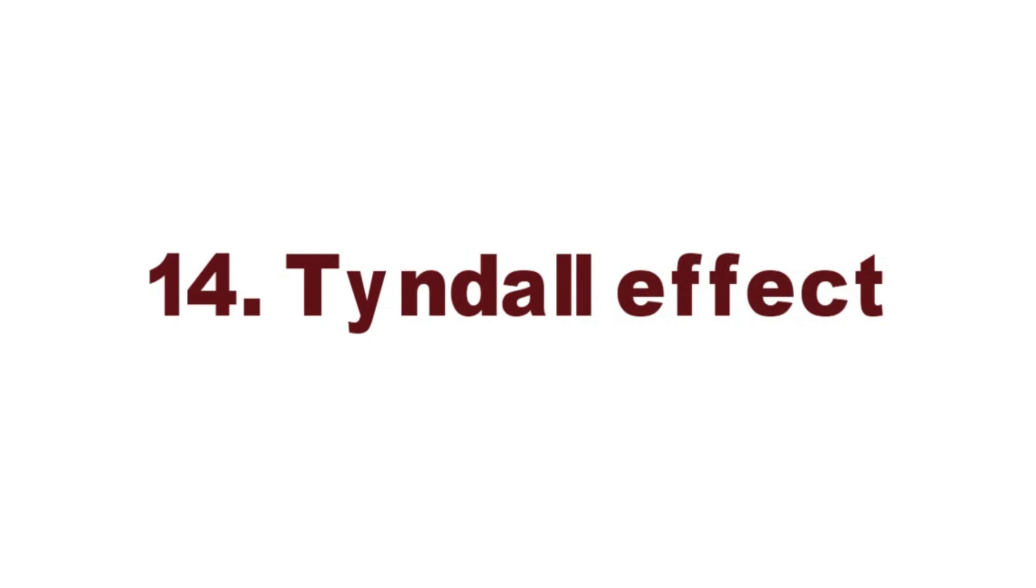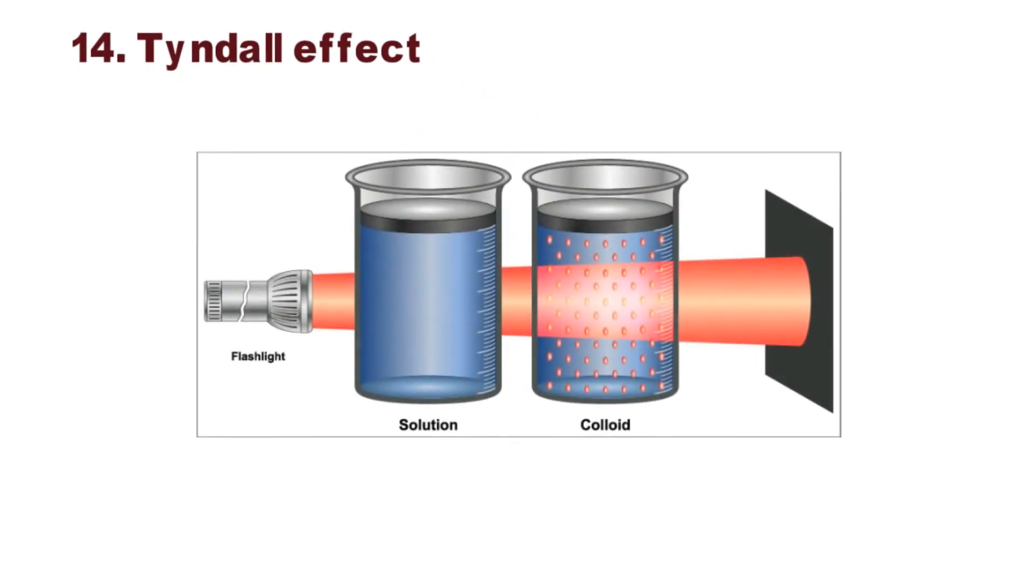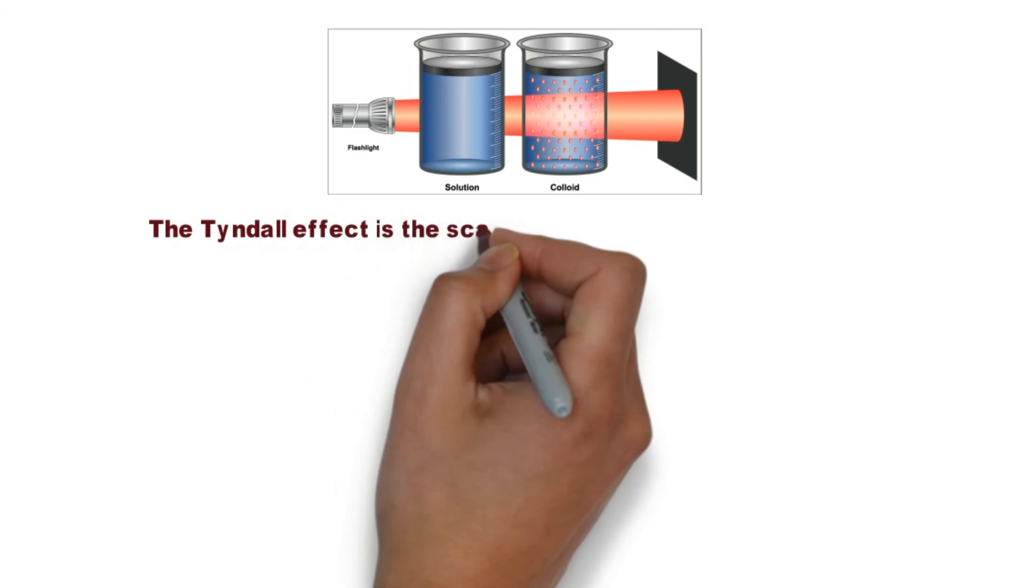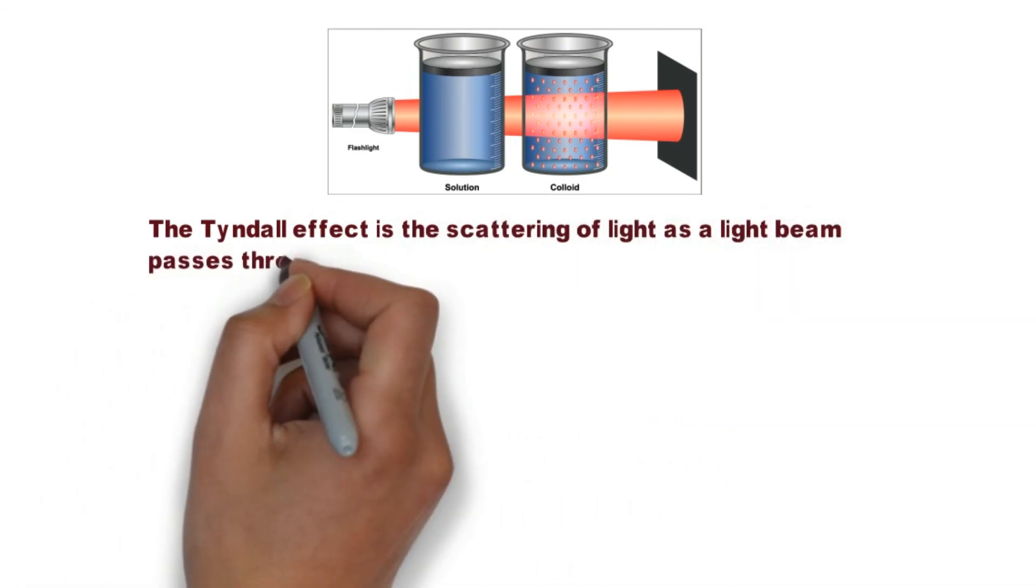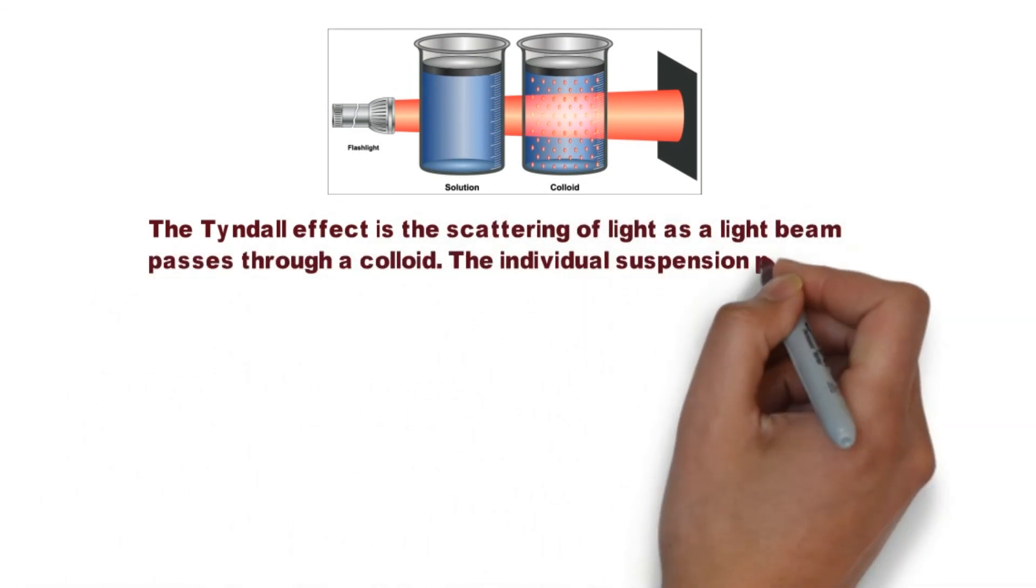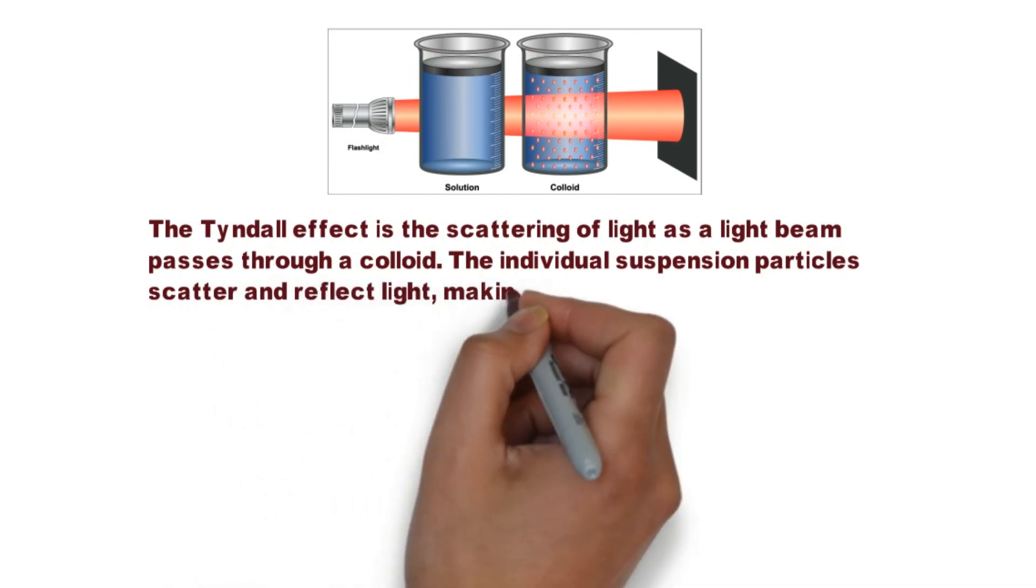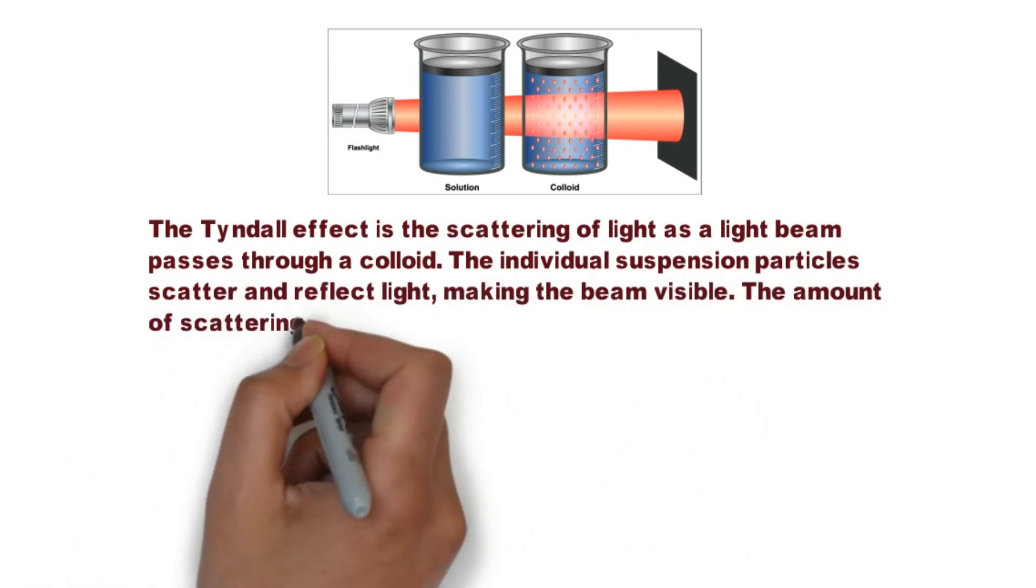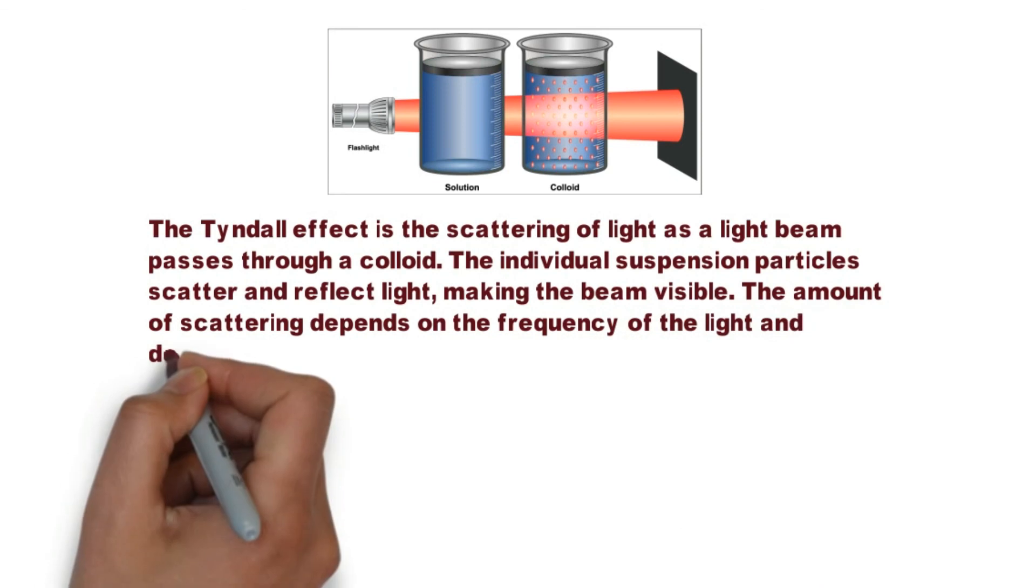Tyndall Effect. The Tyndall Effect is the scattering of light as a light beam passes through a colloid. The individual suspension particles scatter and reflect light, making the beam visible. The amount of scattering depends on the frequency of the light and density of the particles.